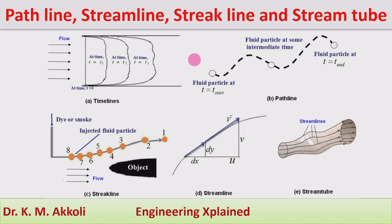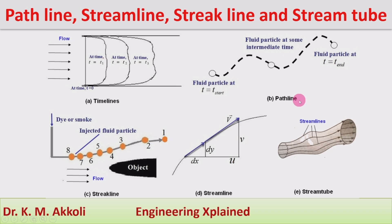There are several terms in fluid flow. The first one is timelines — at different times, how the lines will be in fluid flow — but we are not going to take the definition of this. We will discuss path line, streak line, stream line, and stream tube with examples to understand what these mean.